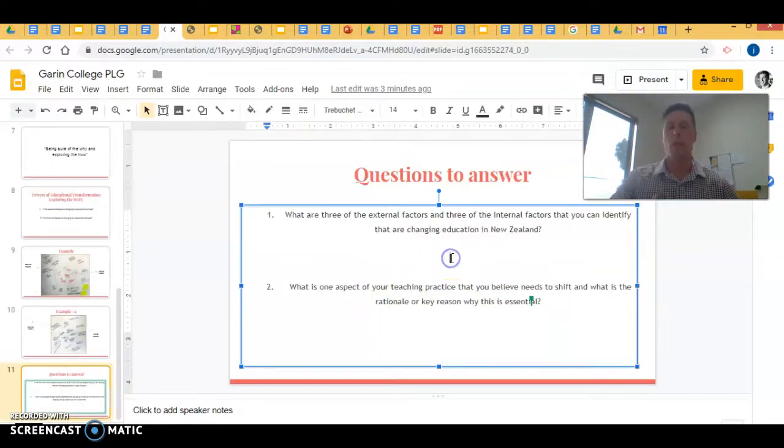This is the aspect where you type in your PLG's response. What are the three external factors in education Aotearoa and what are the three internal factors that are affecting Gowron College that are changing or causing a need for change?